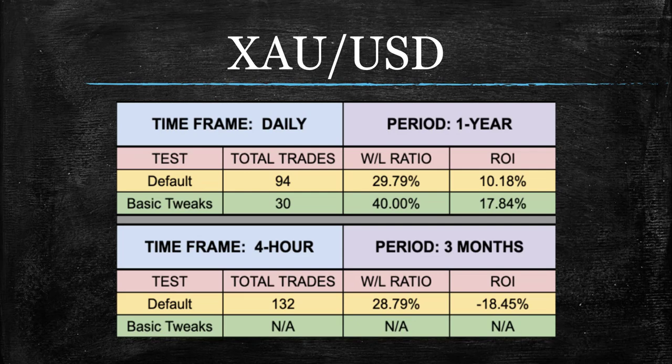Moving on to gold — it kind of does, kind of doesn't. We couldn't even get it above sea level on the 4-hour, but that just happens sometimes. On the daily, 17.84% — it's certainly not the highest we've done; some of these have gotten into the 40s. I do wonder how this ranks in terms of baselines though — might be on the higher end. For all you gold traders out there, this is still worth testing. I keep thinking that the ones that did really well were confirmation indicators and not so much baselines, but I could be wrong. Either way, run it through the tester — what do you have to lose?